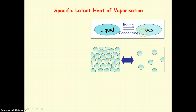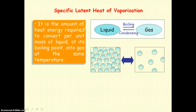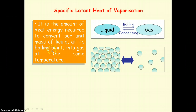Changing a liquid into a gas involves the specific latent heat of vaporization. It is the amount of heat energy required to convert per unit mass of liquid at its boiling point into gas at the same temperature. So if we convert 1 kg of liquid into gas at the boiling point, the specific latent heat of vaporization tells us how much heat energy is needed.